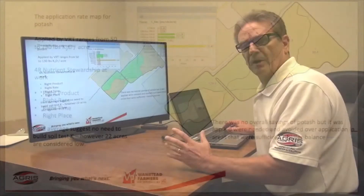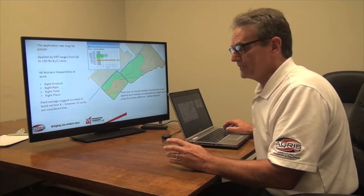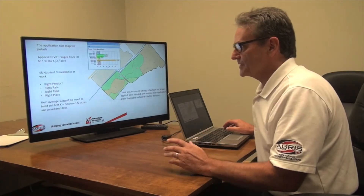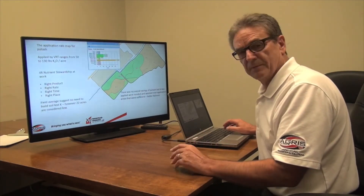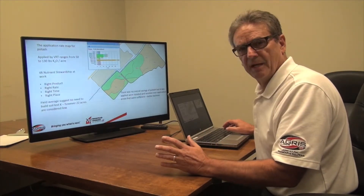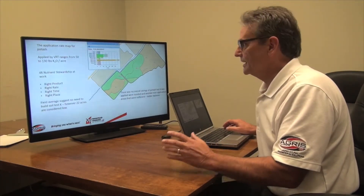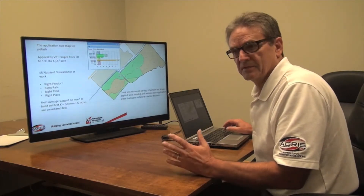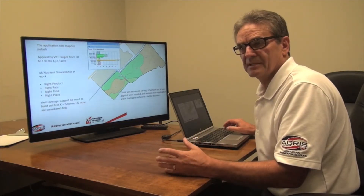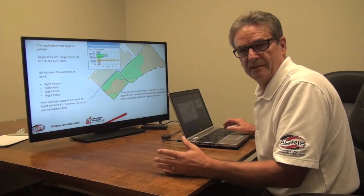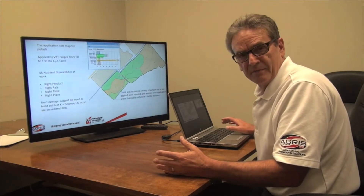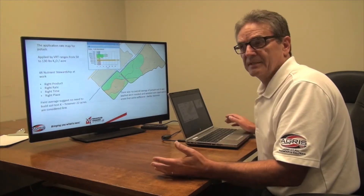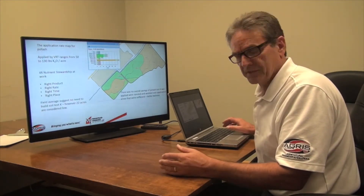So when you talk about nutrient stewardship, this map just epitomizes the right product, right rate, right time, right place. This is where we want to be. This is going to help maximize our yield, minimize environmental footprint, and optimize nutrient use efficiencies.